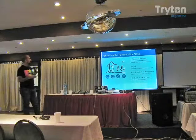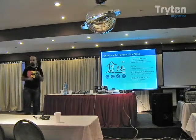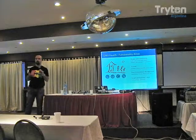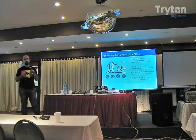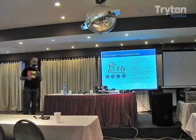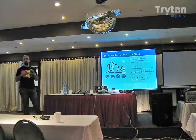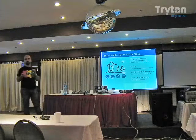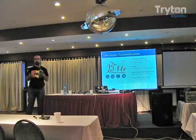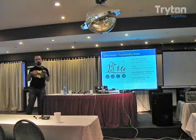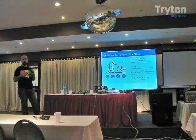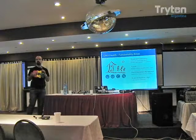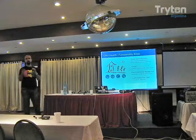GNU Health has these four layers or four functionality areas. The first one has to do with the people — the community, socioeconomics, demographics, and so on. The second one has to do with the typical EMR, that's the doctor-patient relationship, which includes appointments, evaluations, labs, and so on. The third one has to do with the health institution management itself — that's the ERP part.